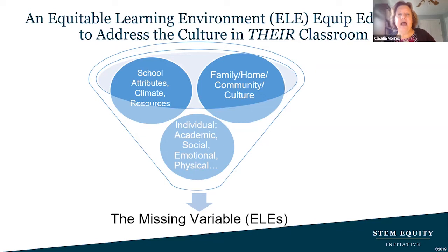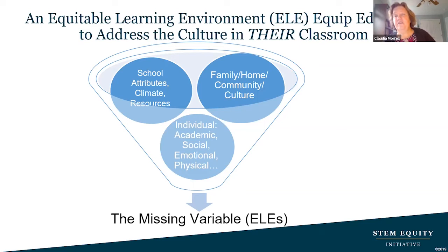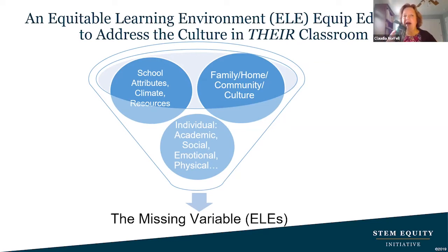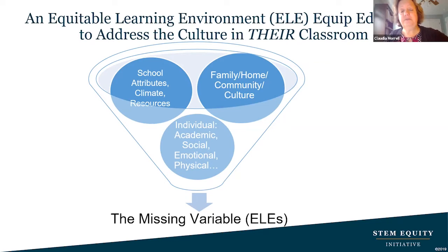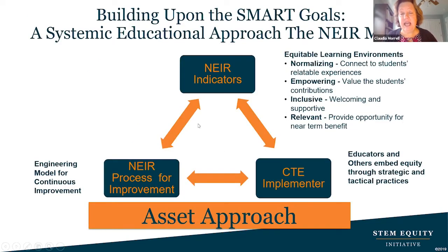It requires a pause and deeper thinking. Historically, as we think about school attributes — the climate and resources — we also have to pay attention to the family, home, and community culture. Culture can be anything: in Pennsylvania you have the culture of the Amish, of Philadelphia, of Susquehanna or Beaver counties. Every individual also brings academic, social-emotional, and physical elements that make them unique — all of those together go into that missing variable and that equitable learning environment.